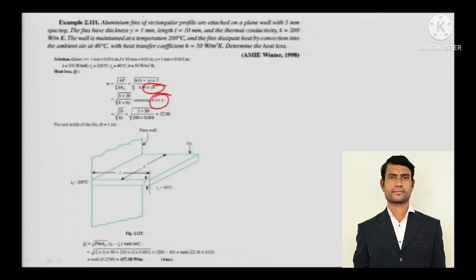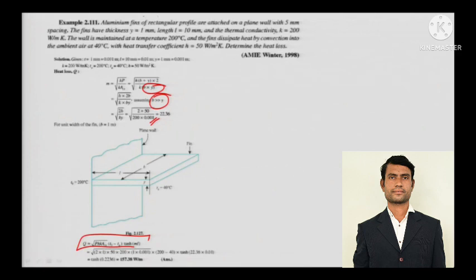You can neglect the thickness in the perimeter since it is quite small here. Since this fin has an insulated tip, the formula is q = √(hPkA) × θ₀ × tanh(mL). Just substitute all the known values of P, h, k, A, θ₀, and m that you have calculated to find q.